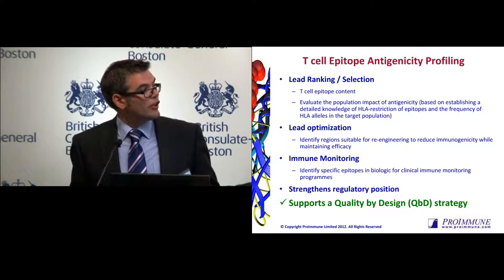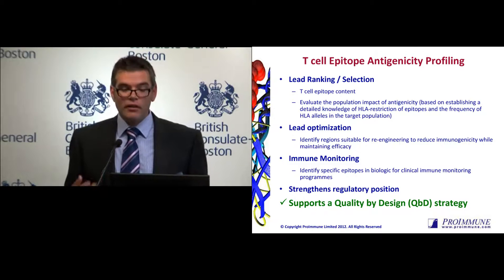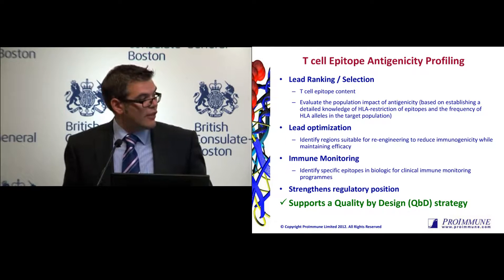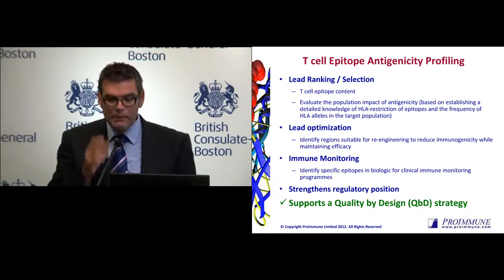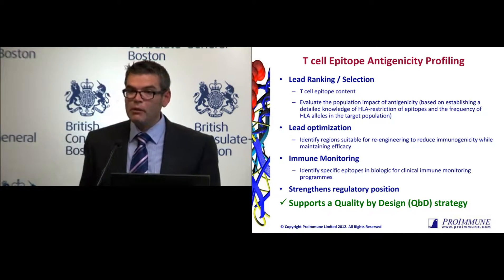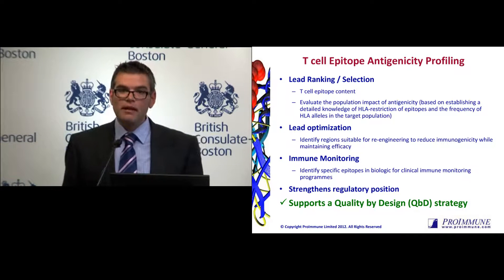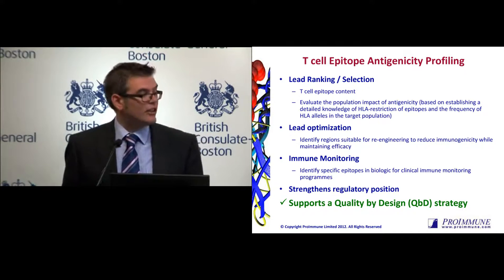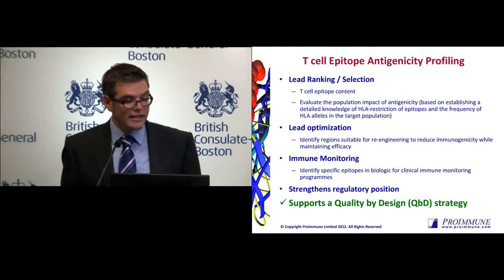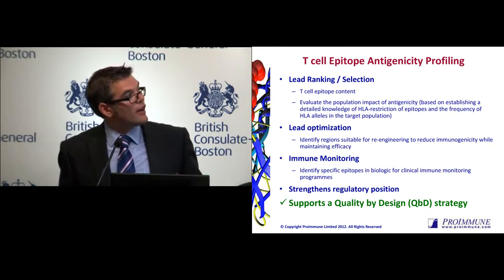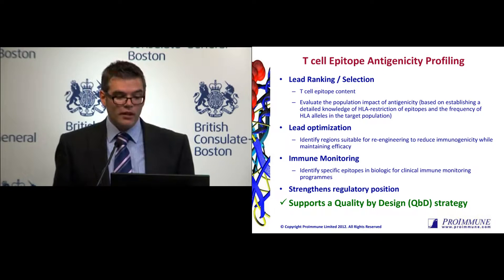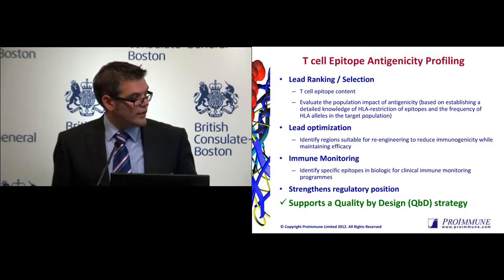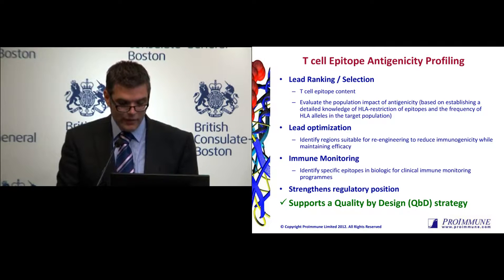Lead optimization — maybe we've already taken our molecule through development and we just want to try and improve it, thinking about de-immunization strategies while maintaining efficacy. We may also want to identify specific epitopes in patients receiving therapeutics for clinical immune monitoring — something which, at this stage, on the T-cell epitope level, is not really being carried out. Access to clinical material is a real limitation. Overall, this information identified through T-cell epitopes can strengthen the regulatory position, add value to the product going through the pipeline, and support quality by design.